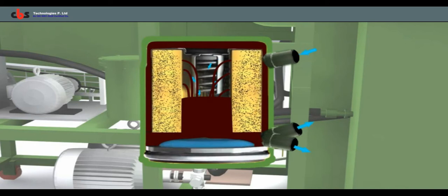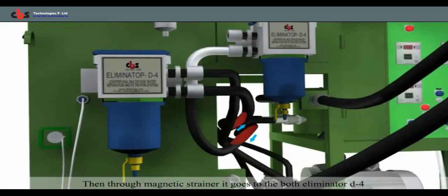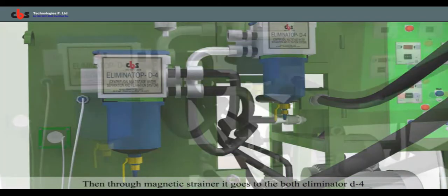Then the dirty oil through magnetic strainer goes to both centrifugal multistage water separator. In eliminator, free water and dirty oil is separated.